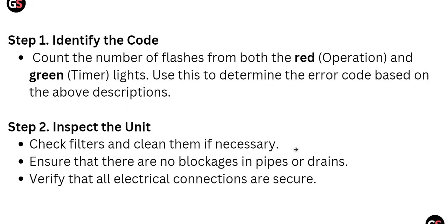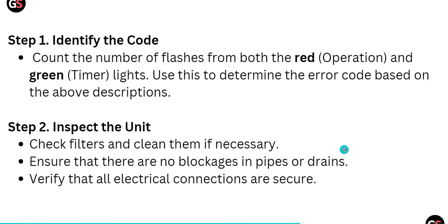Now we will see how to fix these errors. First, identify the code and then inspect the unit. Check filters and clean them if necessary, ensure there are no blockages in pipes or drains, and verify all electrical connections are secure.